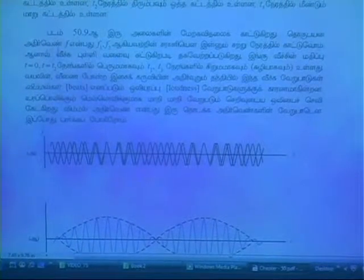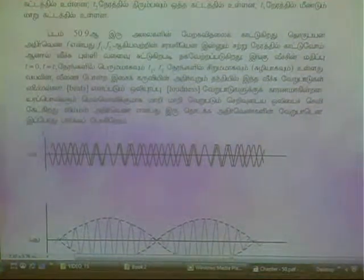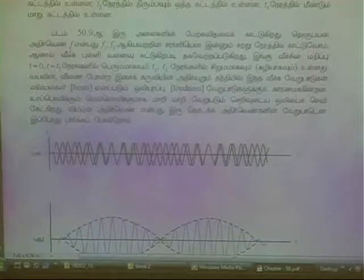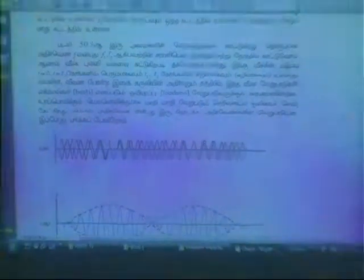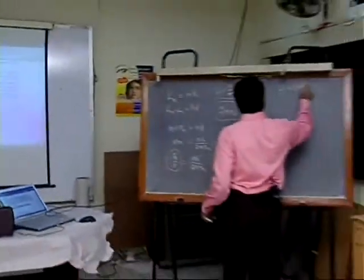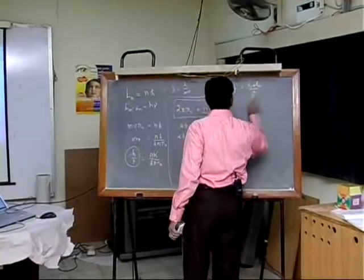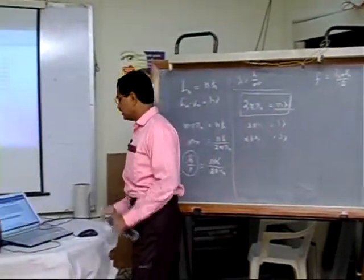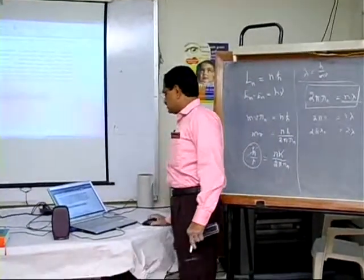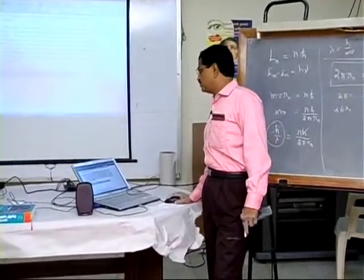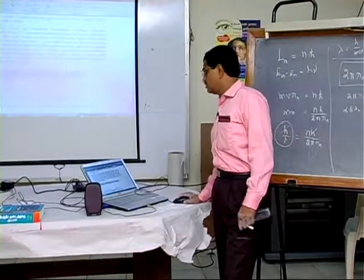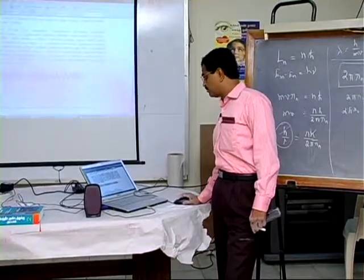We have two frequencies, F1 and F2. F1 is the first frequency, F2 is the second. F1 plus F2, then F1 minus F2 gives us the beat frequency.